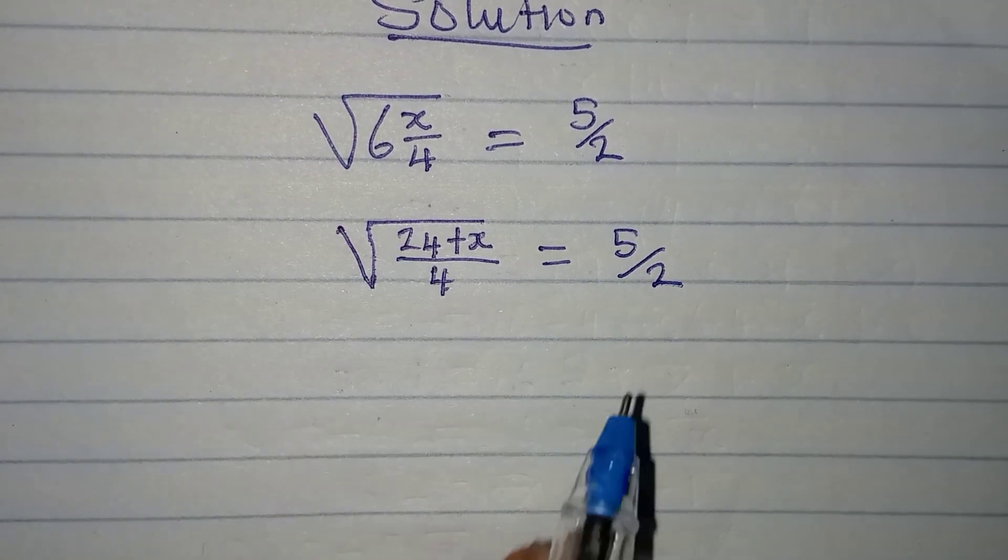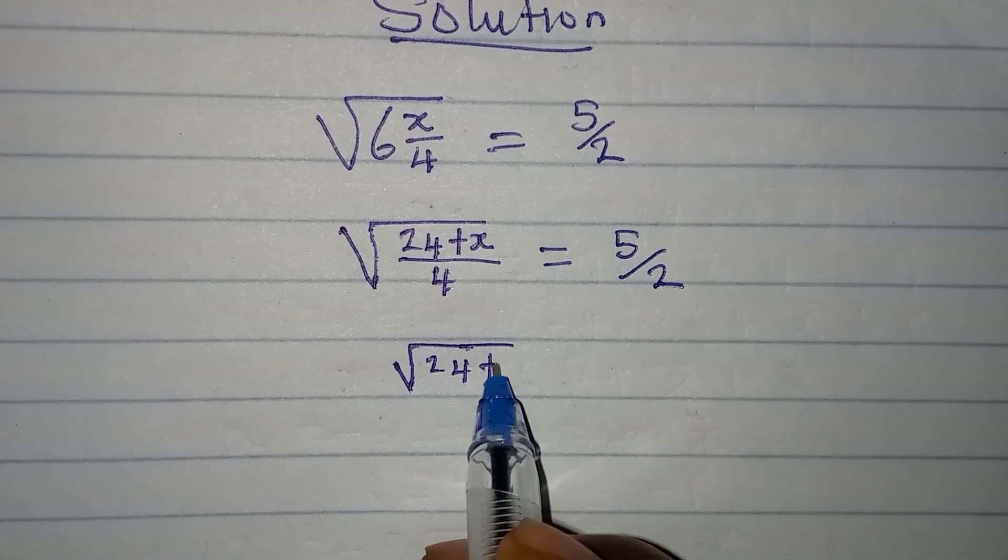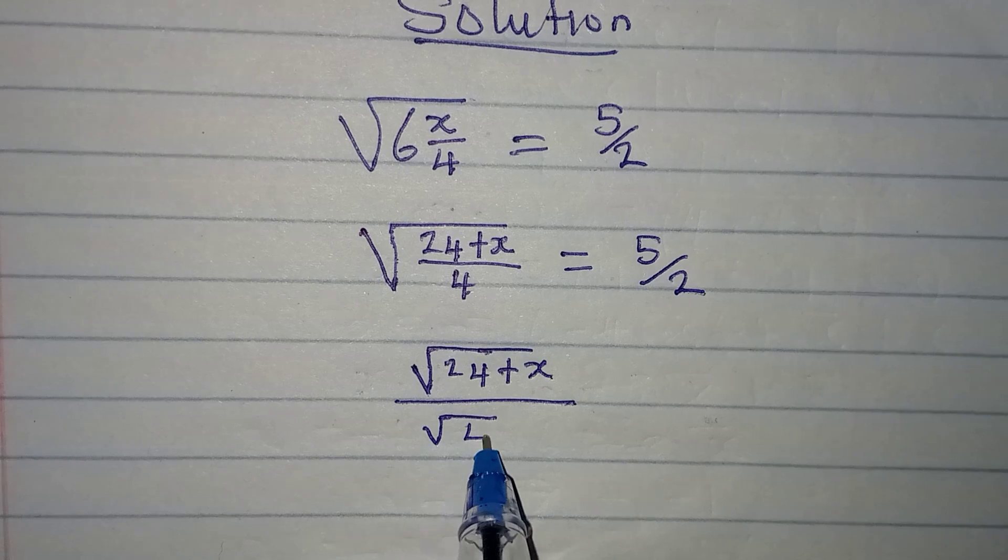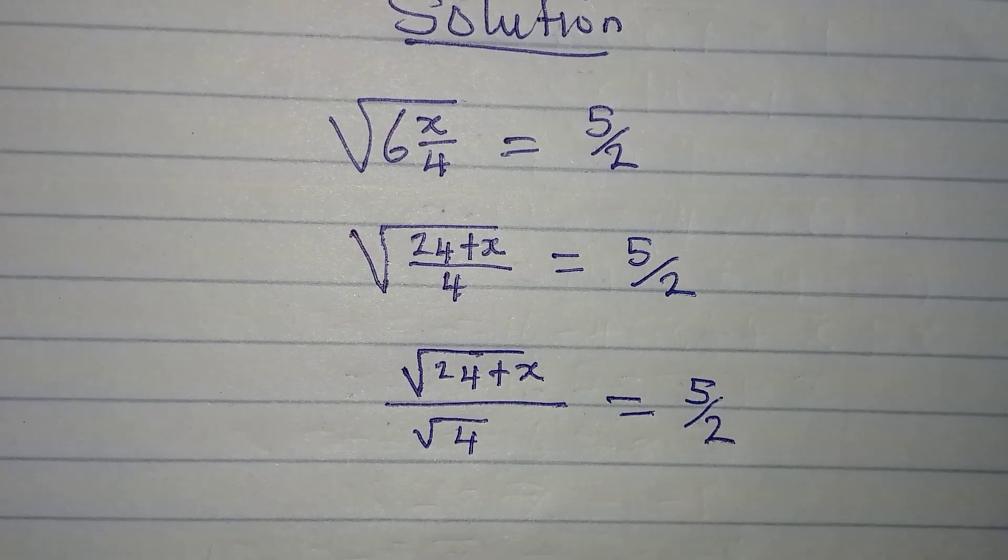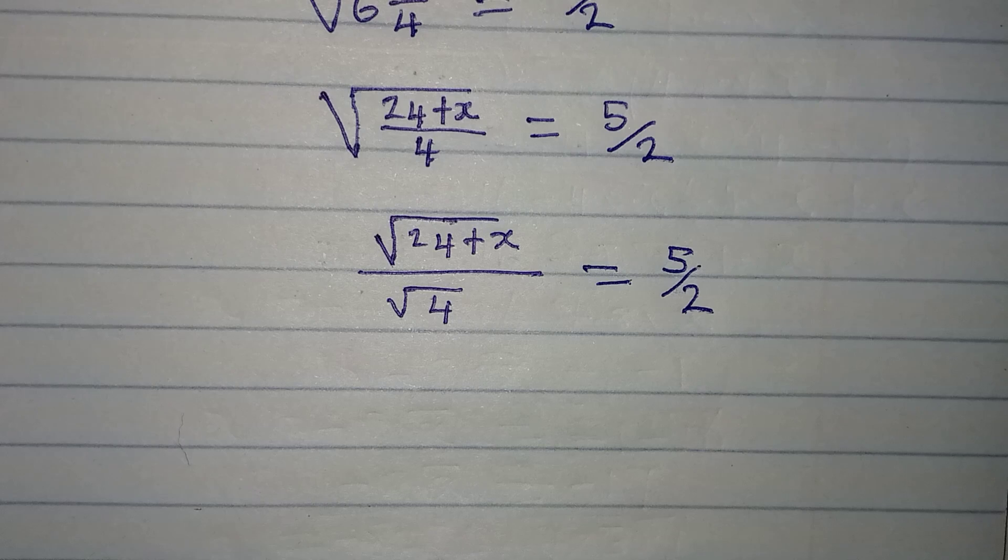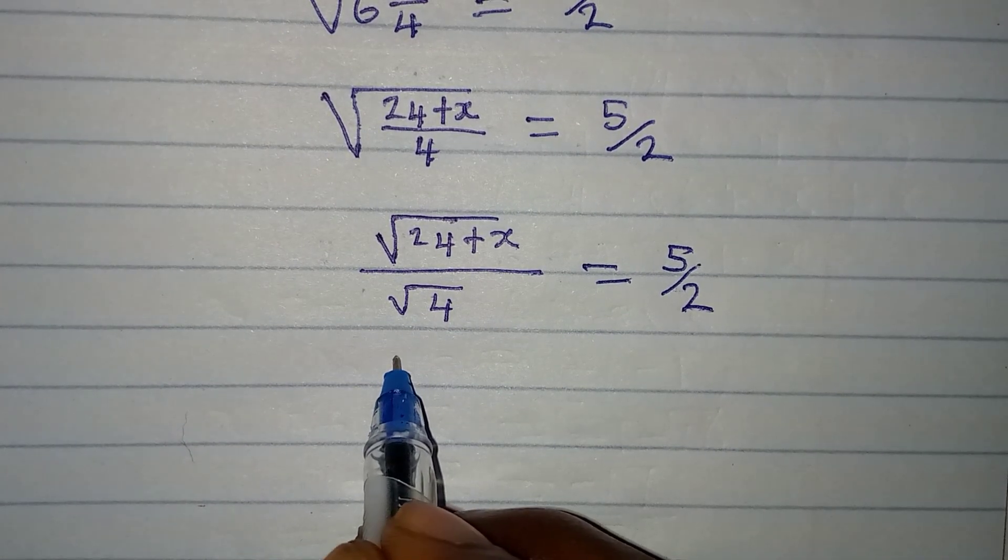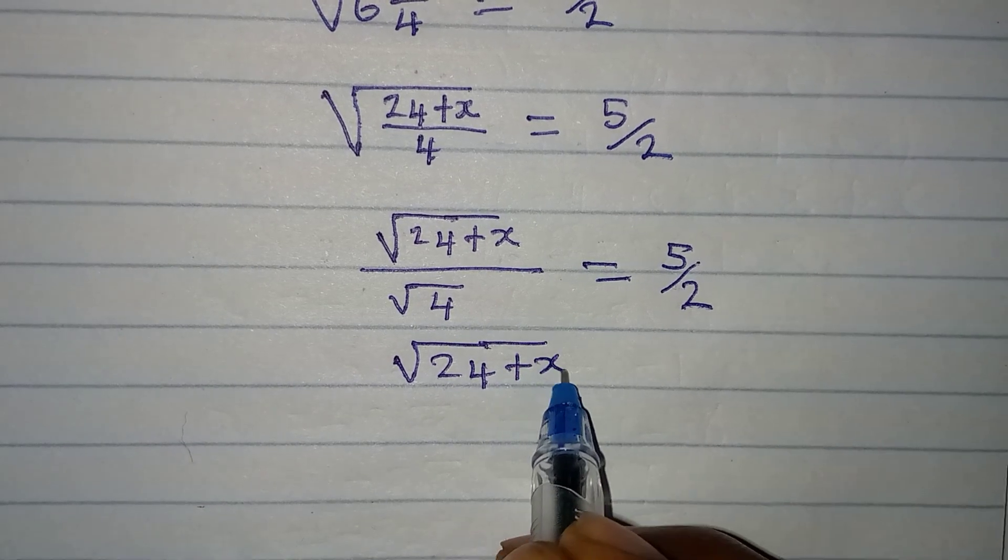We can split this so we have square root of 24 plus x all over square root of 4 is equal to 5 over 2. Now we can split it again so we have square root of 24 plus x over 2 equals 5 over 2.